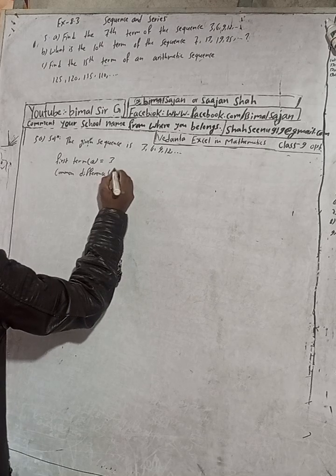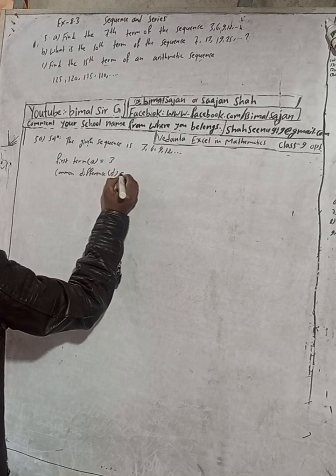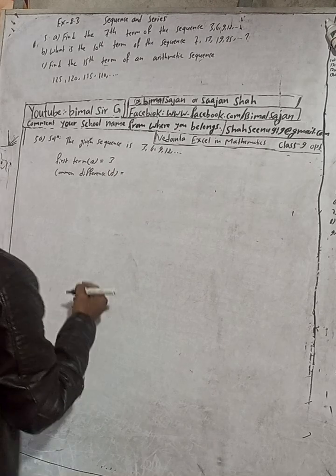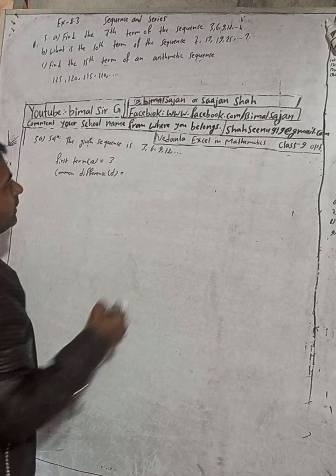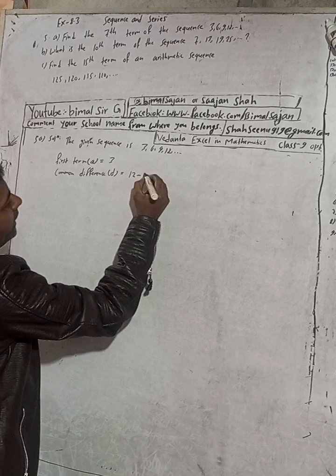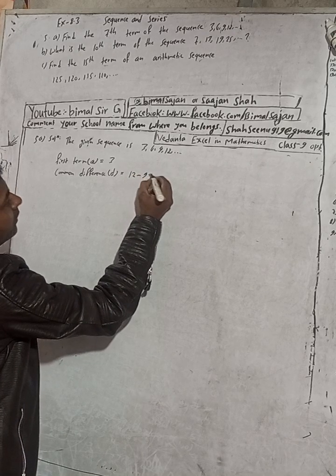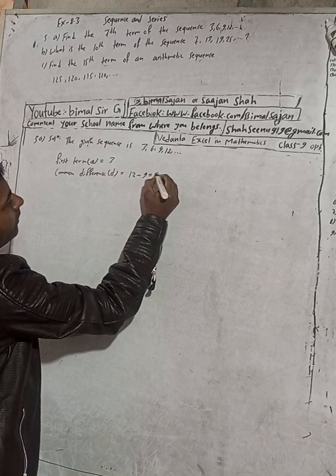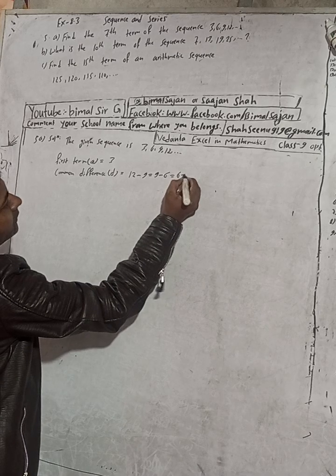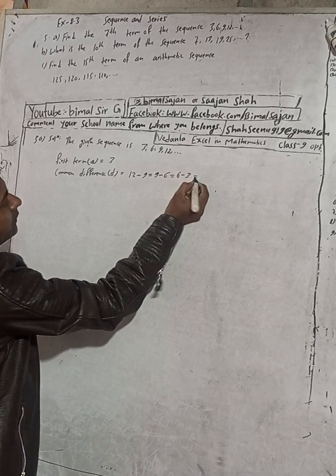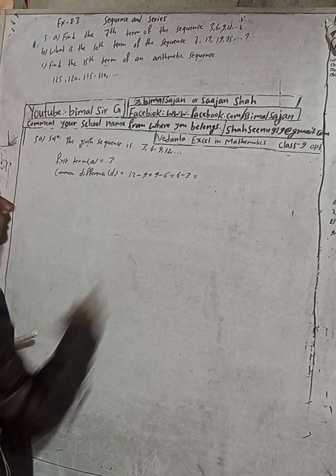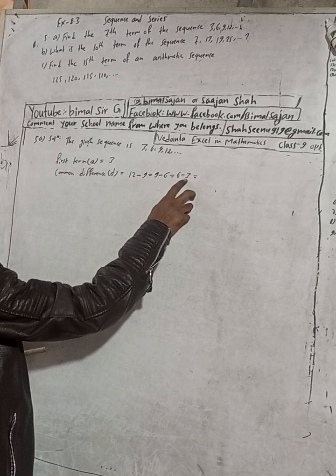The common difference, D, can be found by subtracting consecutive terms: 12 minus 9, then 9 minus 6, and 6 minus 3. Each gives a difference of 3, so D equals 3.